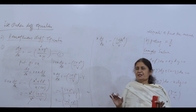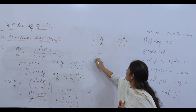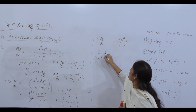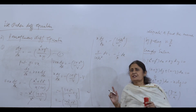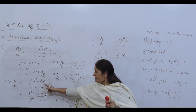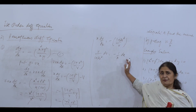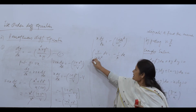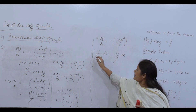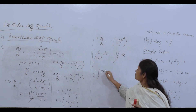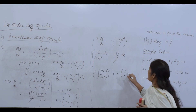Now separate variables: v/(1 + 2v²) dv = −(1/x) dx. This is variable separable in v and x. To integrate the left side, note the derivative of 1 + 2v² is 4v, so multiply and divide by 4: (1/4)·∫4v/(1 + 2v²) dv = −∫(1/x) dx.